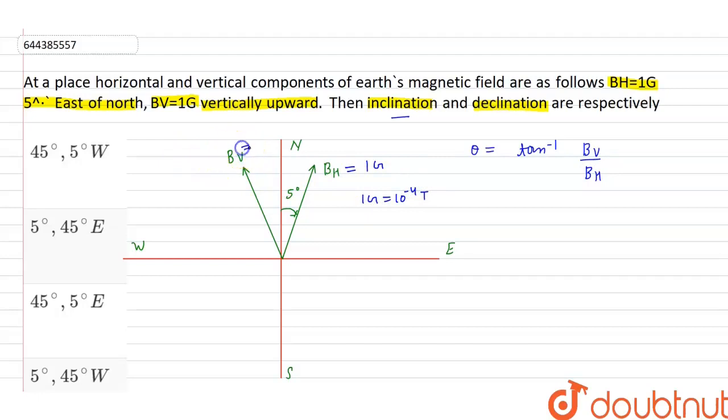And BV is equal to 1G. So magnetic inclination, Theta is equal to tan inverse 1 divided by 1, which is equal to 45 degree.